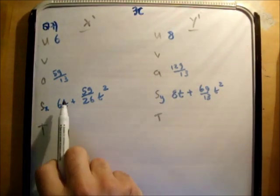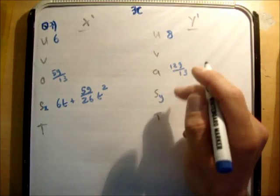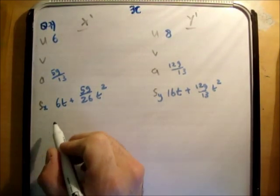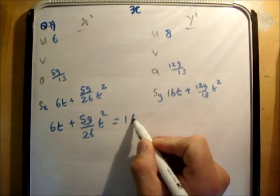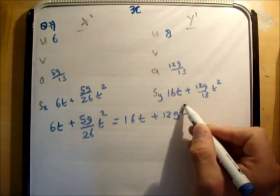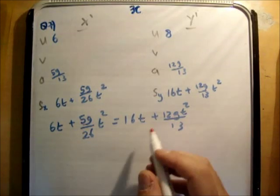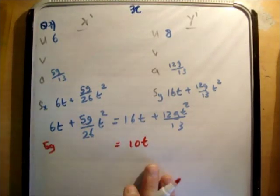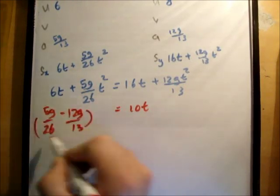Alright, so what we want to find out is the time when s sub x is twice s sub y. So, I need to multiply this by 2. So, I'm going to make this 12, this 16. So, I need to find out when this is equal to that. So, we have 6t plus 5g over 26t squared is equal to 16t plus 12g t squared over 13. And we can bring everything together. We bring the t squareds together and the t's together. So, this becomes 10t.